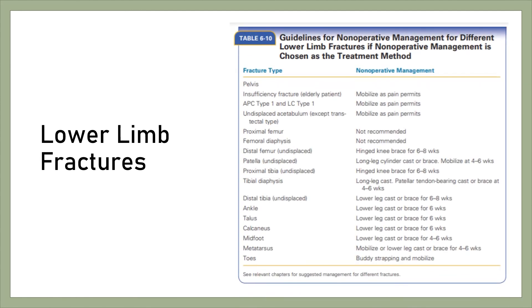Guidelines for non-operative management of different lower limb fractures: For distal femur undisplaced, use a hinged knee brace for 6 to 8 weeks. For patella undisplaced, use a long leg cylinder cast or brace, mobilizing at 4 to 6 weeks. For tibial diaphysis, use a long leg cast or patellar tendon bearing cast for 4 to 6 weeks. For midfoot, use a lower leg cast or brace for 4 to 6 weeks.